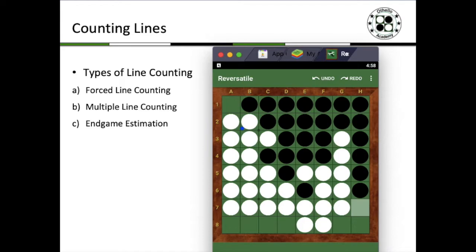So even though you might ask me, why is it so important to count lines? Especially when I'm already winning as black by such a huge margin. Why does it matter?